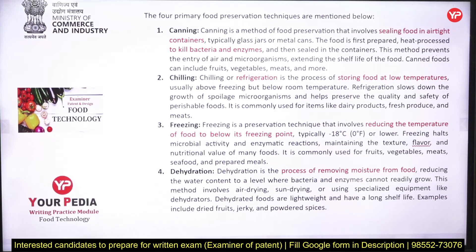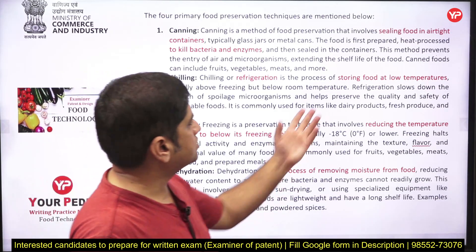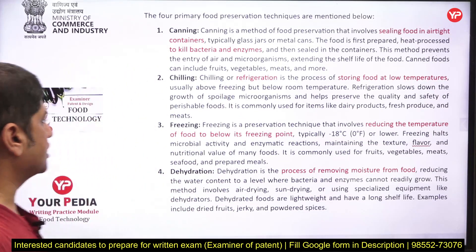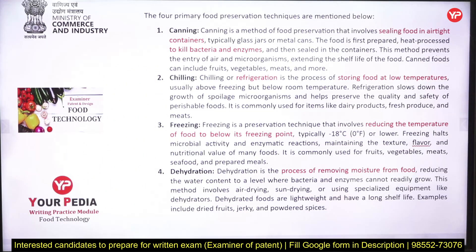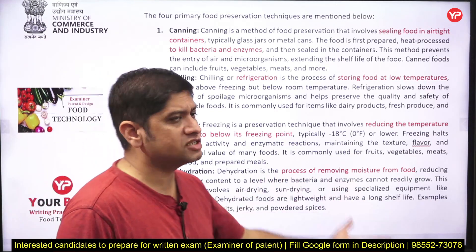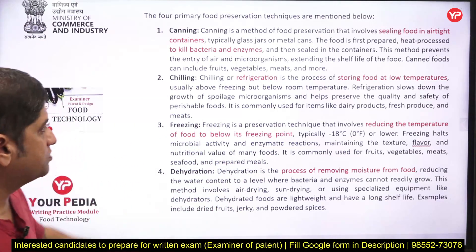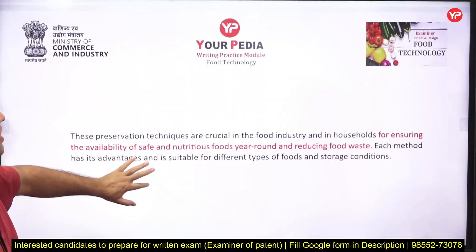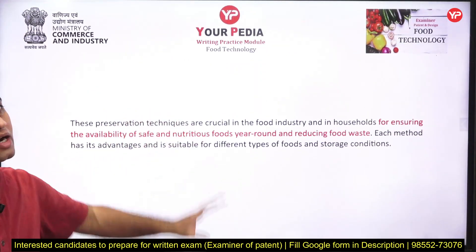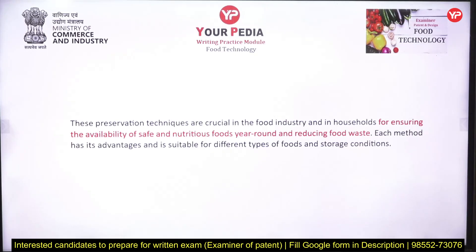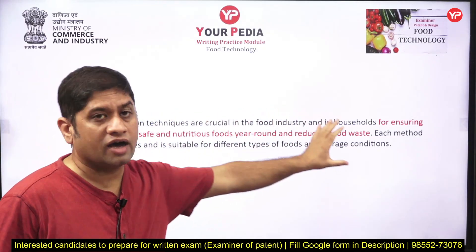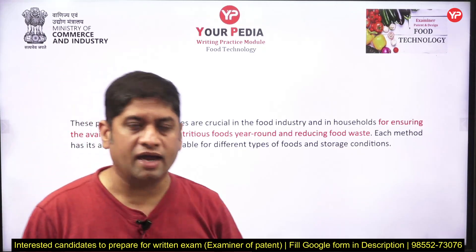Chilling is a refrigeration process to store food at very low temperature. Freezing is below the freezing point, typically minus 18 degrees centigrade — you can underline that. Dehydration is to remove the moisture — underline it. Wherever you put 1, 2, 3, 4, you can explain that well. Give a conclusion of two to three lines, and also open with two to three introduction lines, then write points, then close.